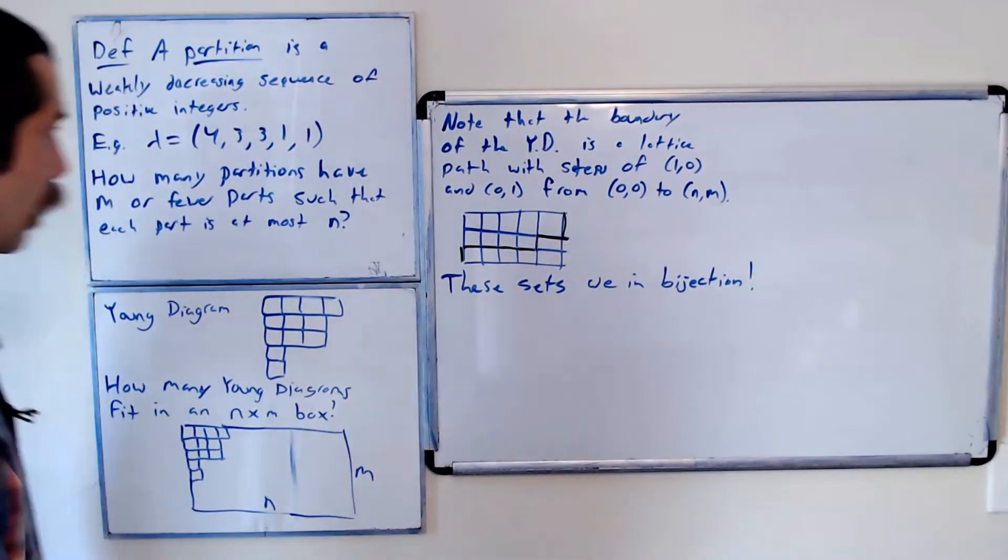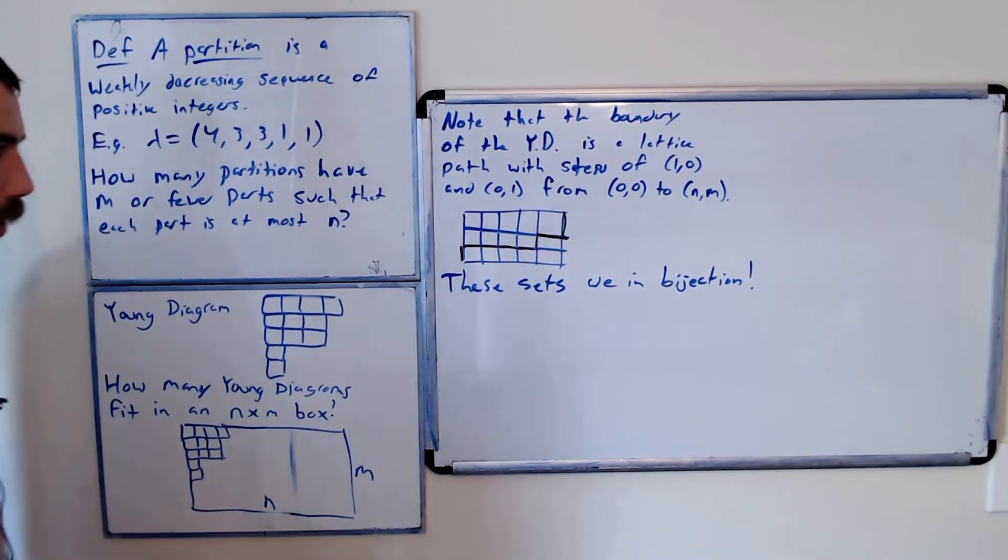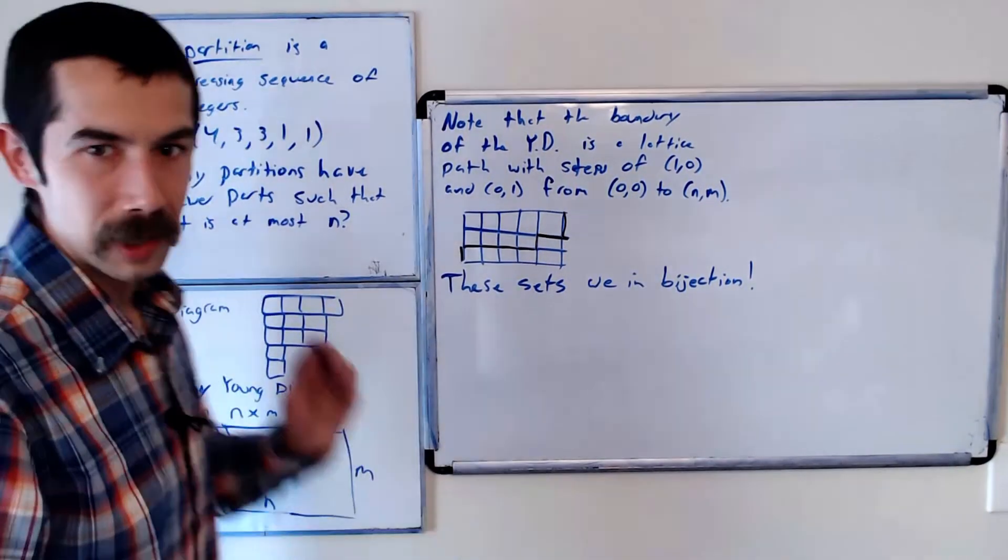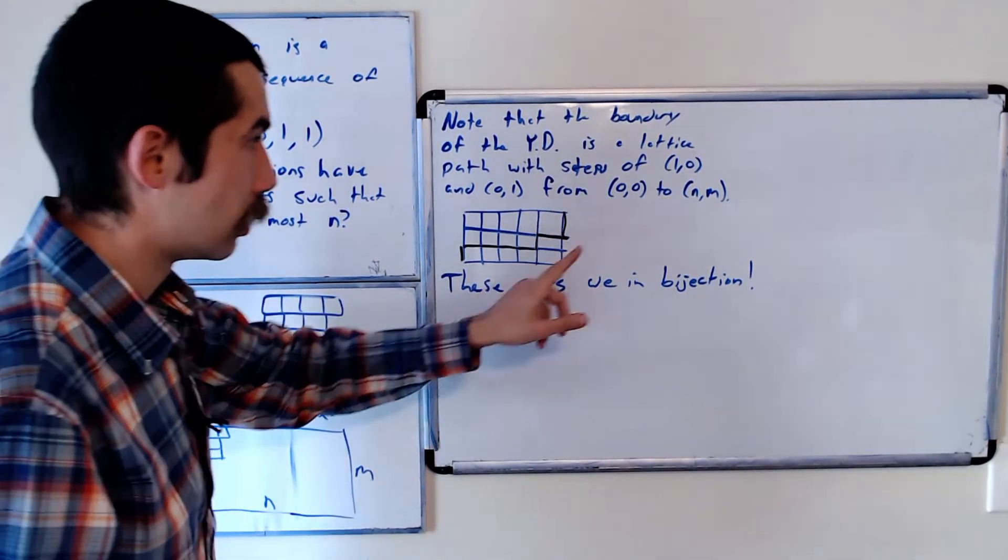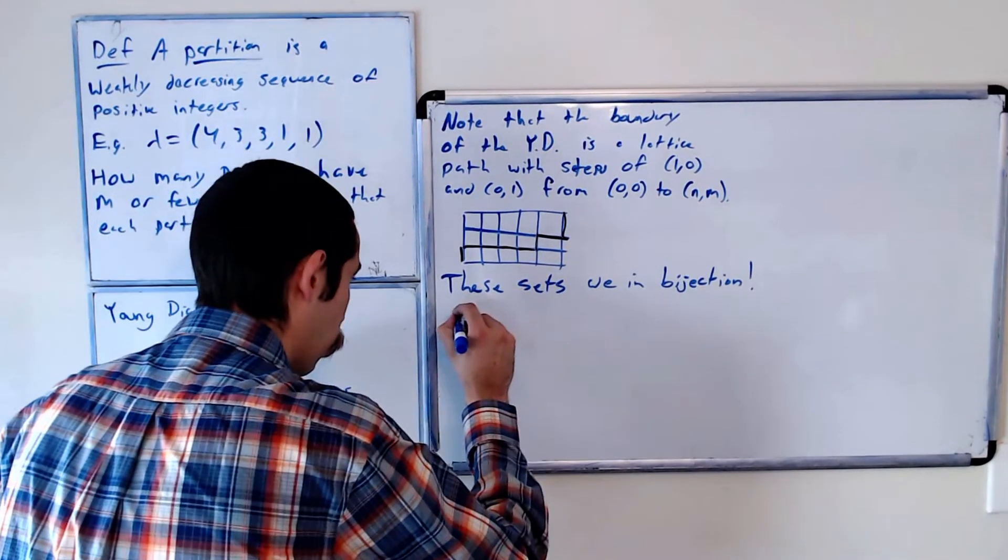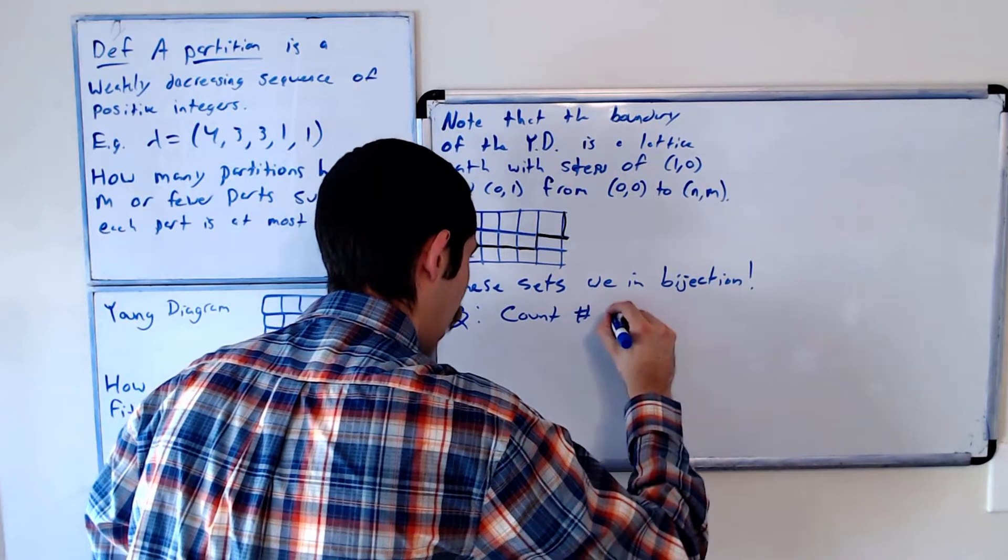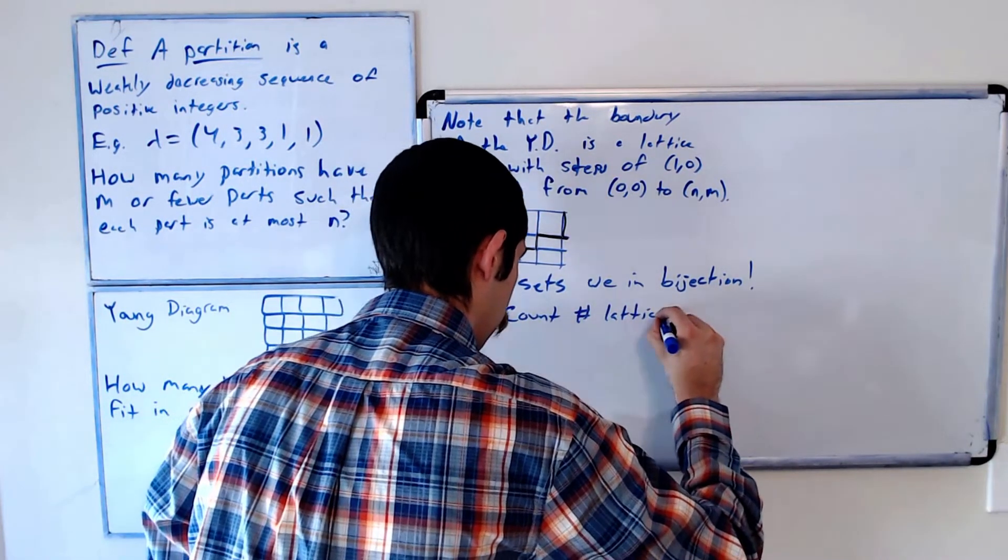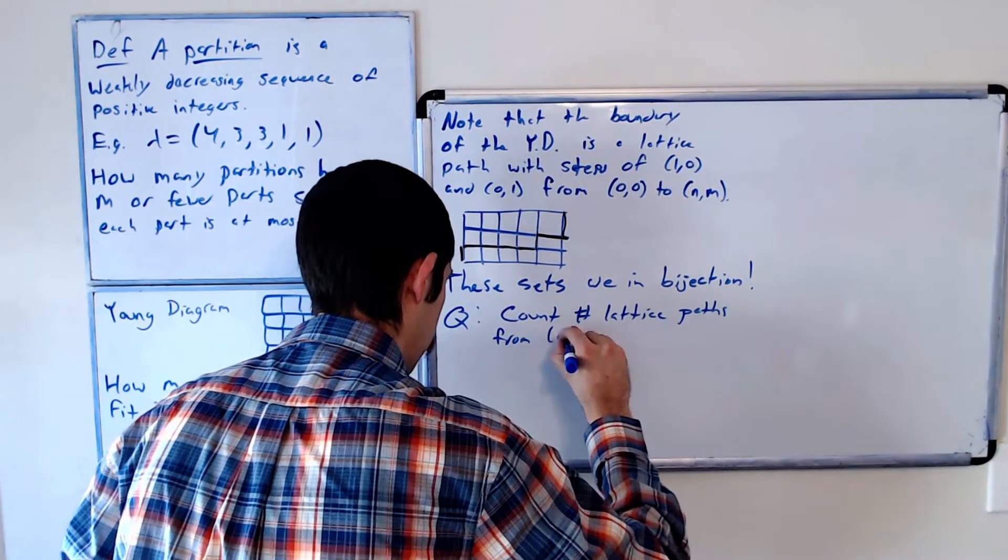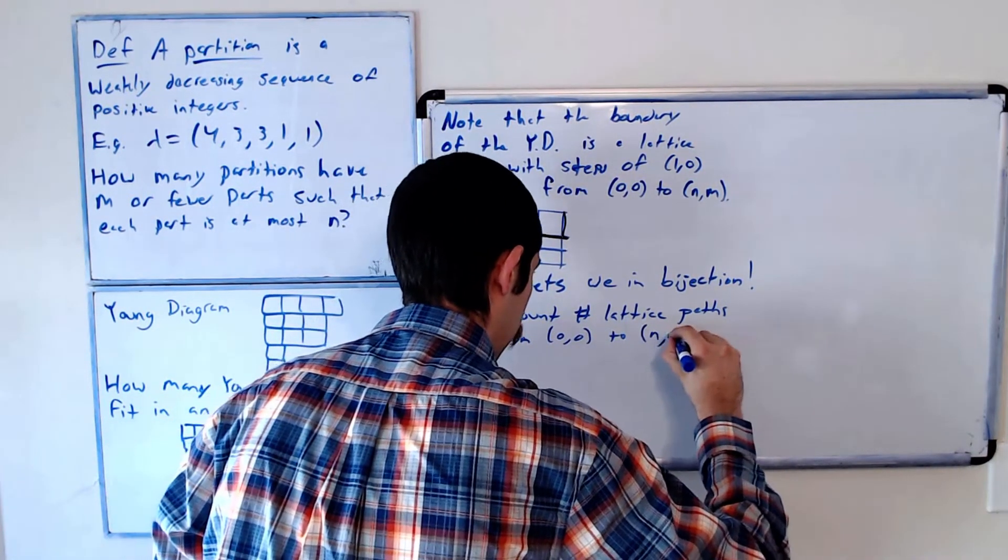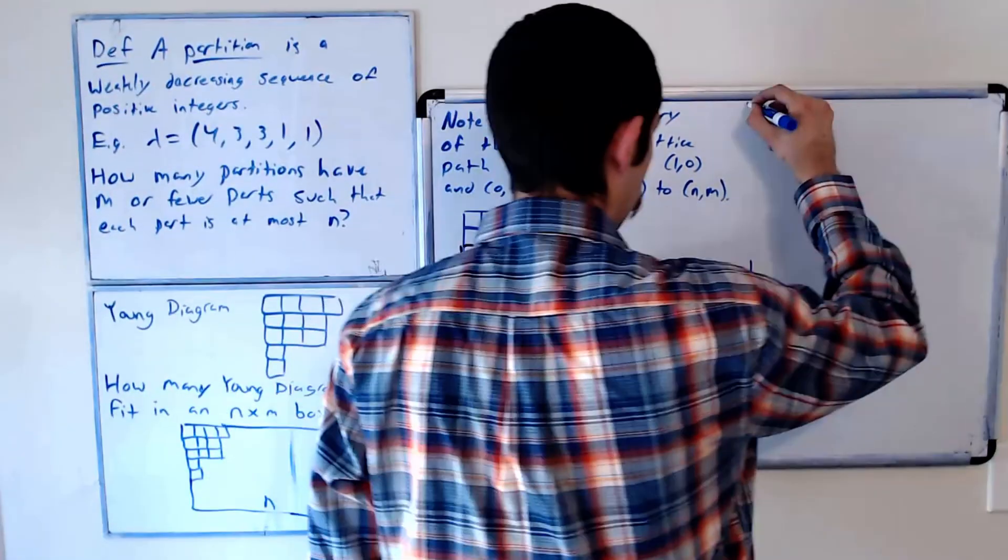So now the question, instead of counting partitions with a certain property or Young diagrams with a certain property, what we're going to do is count the number of lattice paths from (0,0) to the point (N,M). Our question becomes: count the number of lattice paths from (0,0) to (N,M).